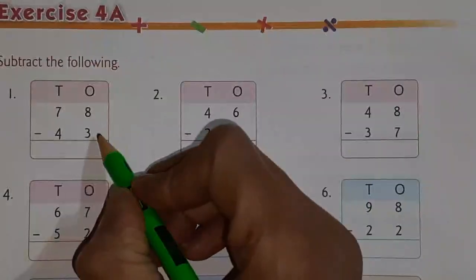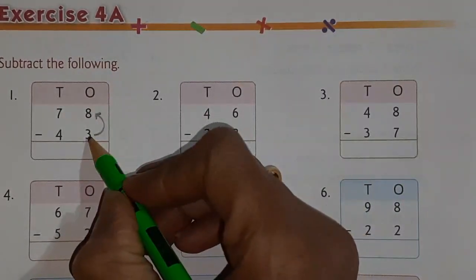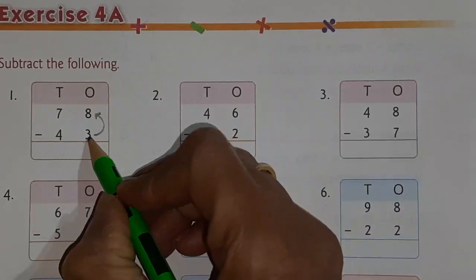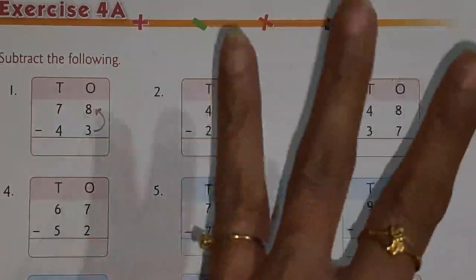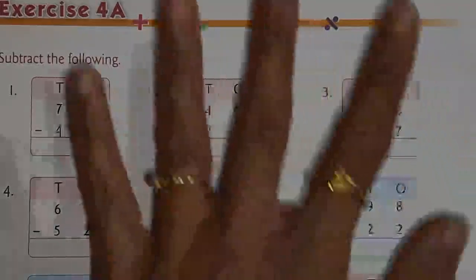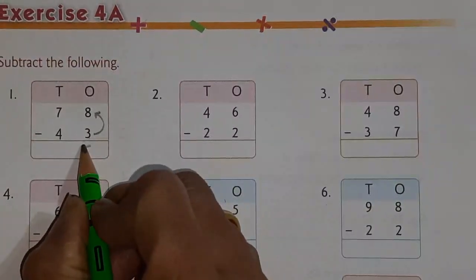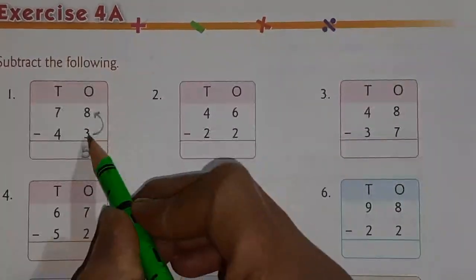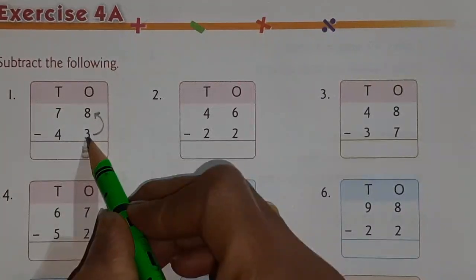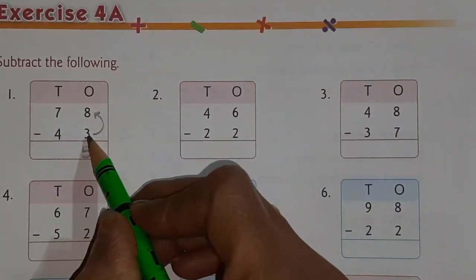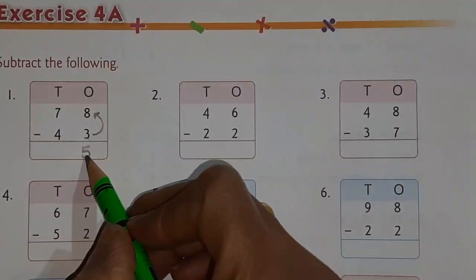After 3 you have to count till 8. After 3 there come 4 numbers, so you start from 4 — 4, 5, 6, 7, and 8 — so 5 fingers. So 5 is your answer. See students, we are counting after this number: after 3 comes 4, so we started counting from 4. From 4 to 8 we counted and our answer is 5.